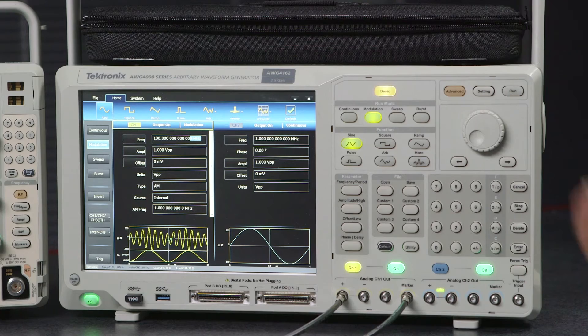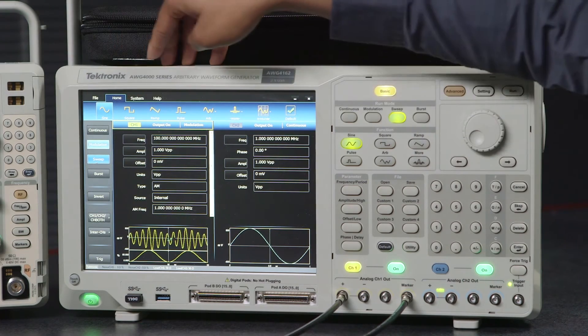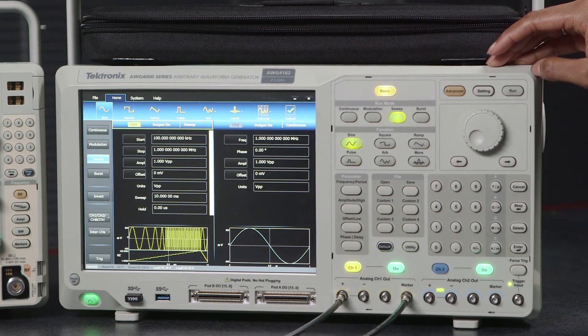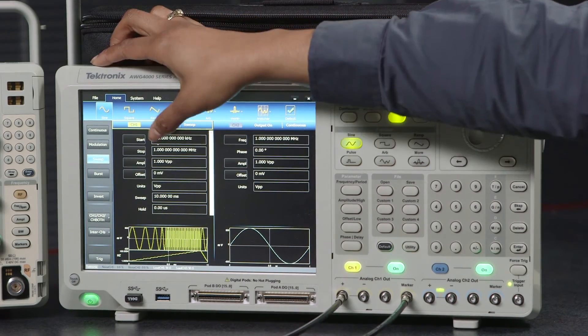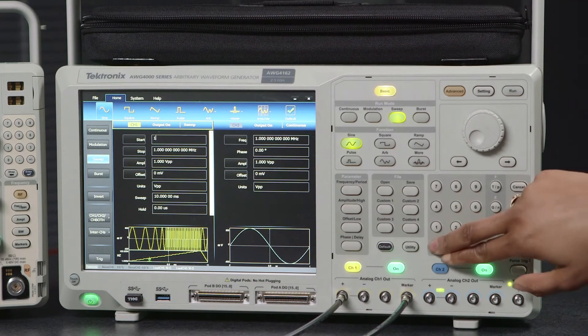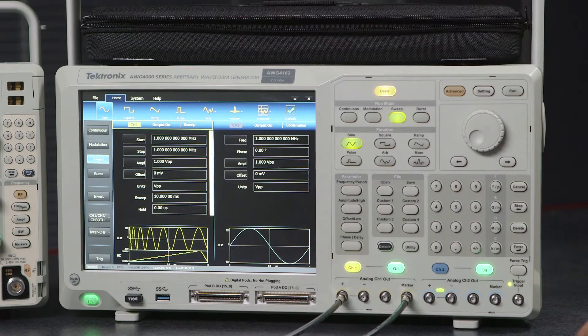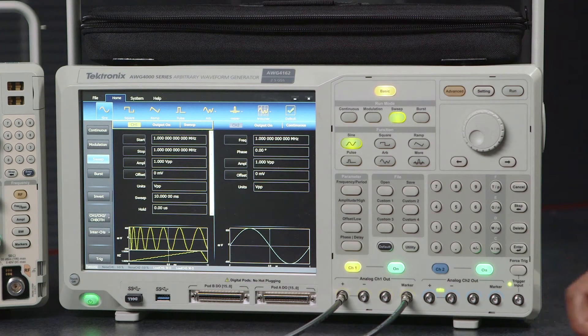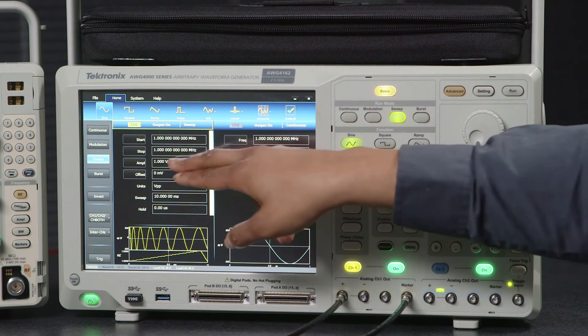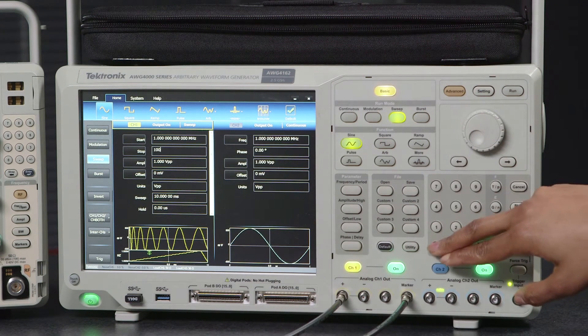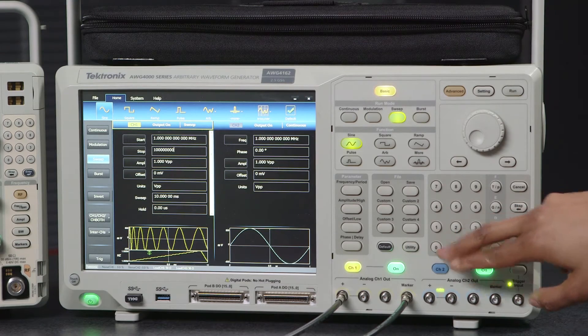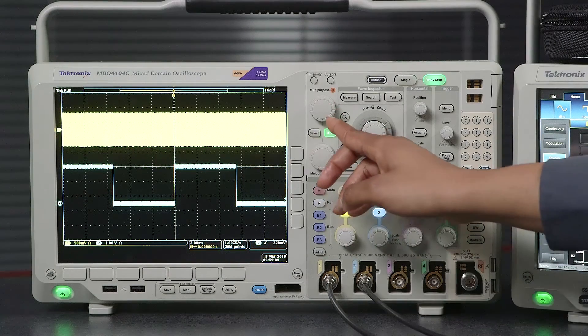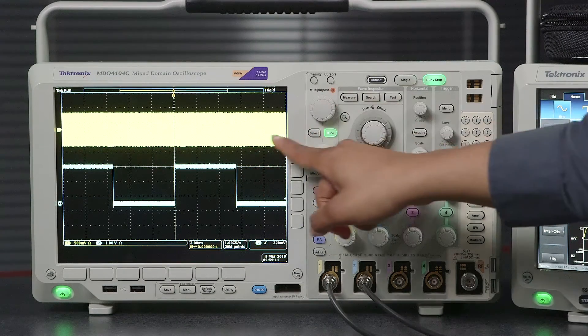We're going to switch the run mode to sweep and we're actually going to change our start frequency to 1 MHz and our stop frequency is going to move to 100 MHz. As you can see here the swept waveform from this side to this side of the decreasing frequency.